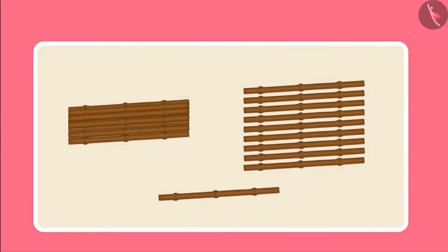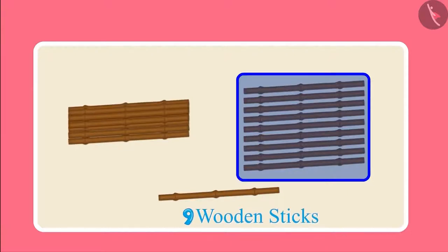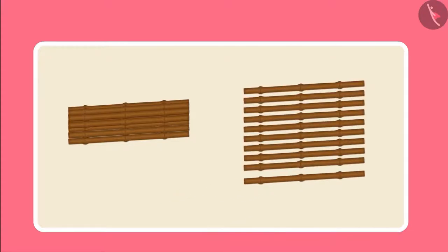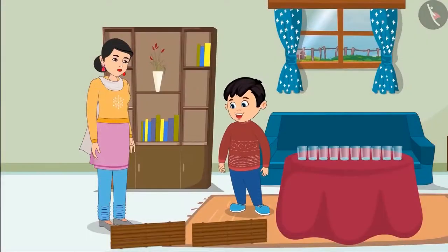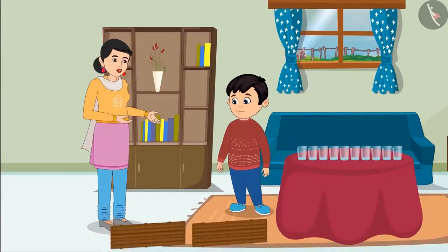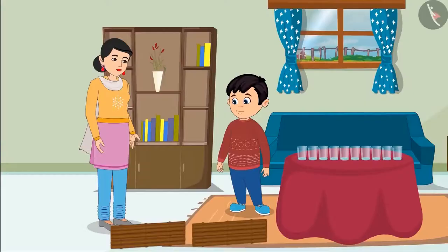So Chotu, as soon as we have 10 objects, we make their bundle and count open objects till 9. As soon as we get another wooden stick after 19, we make another bundle of 10, which gives us 2 bundles of 10. That means I got 20 wooden sticks. Yes Chotu, you are absolutely correct. Now go and wash your hands. You also count the number of objects around by making bundles of 10.